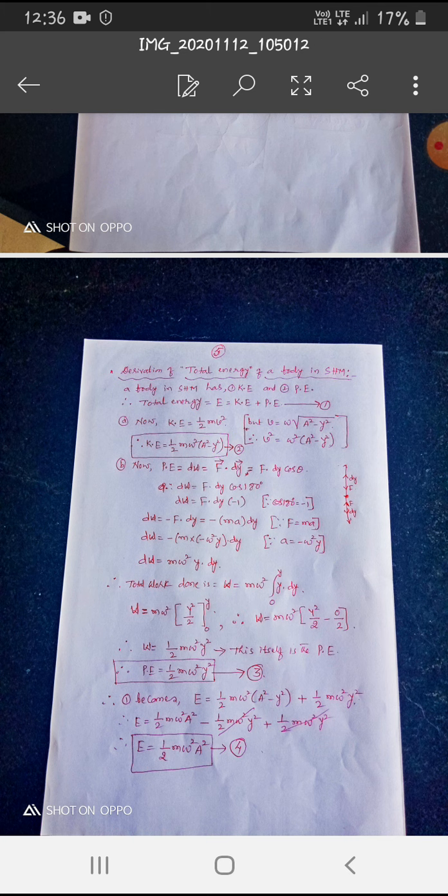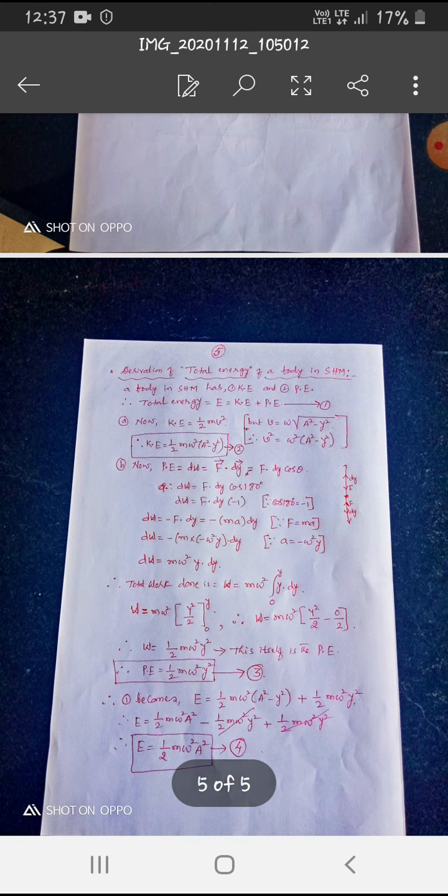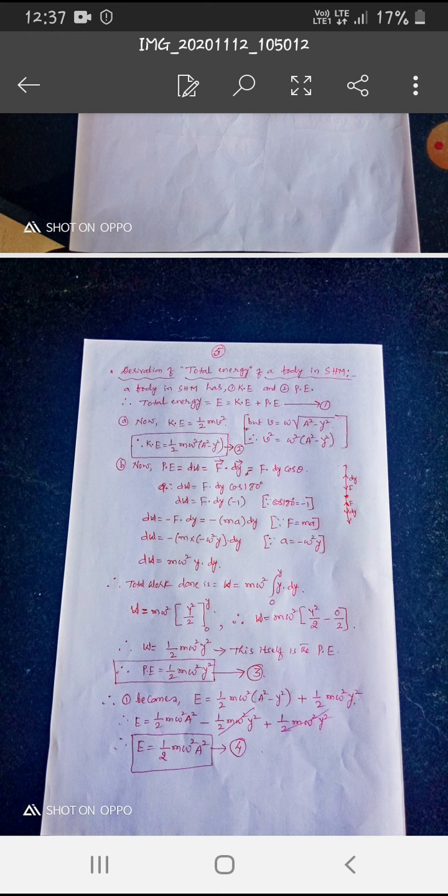When we solve this, we get F into dy, the force into dy we have to test. And, dy is equal to Mw square y into dy. And, the work done is M W square by y into dy. So, Mw square y square by 2 into y. So, P potential energy is equal to half into Mw square y square.